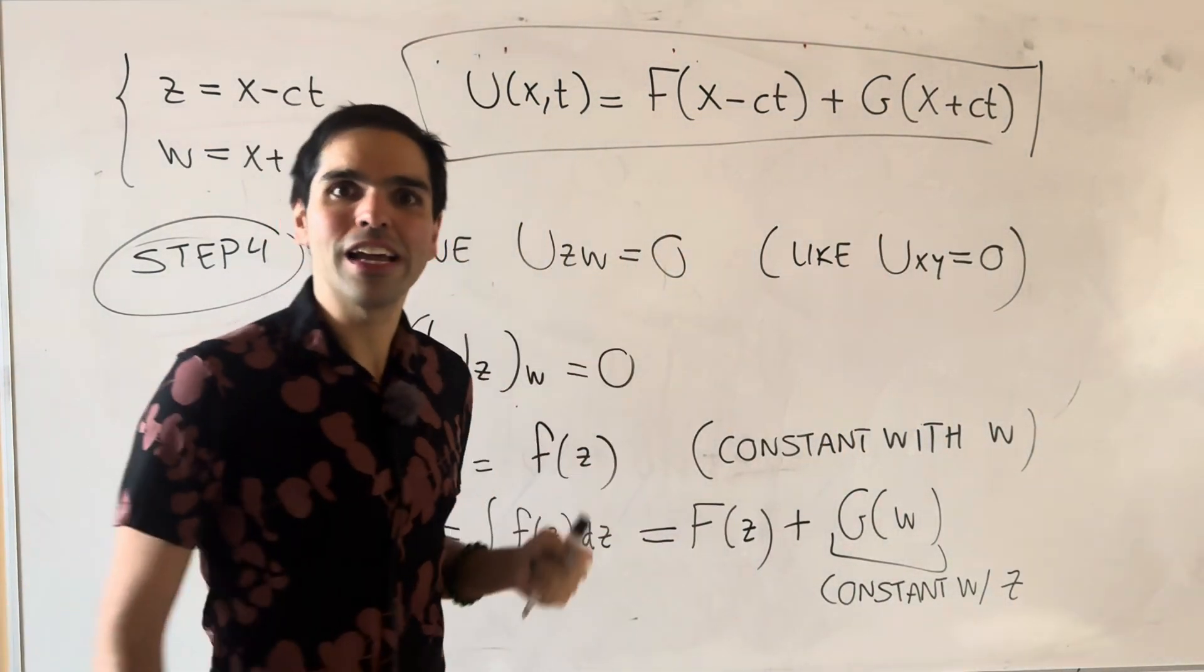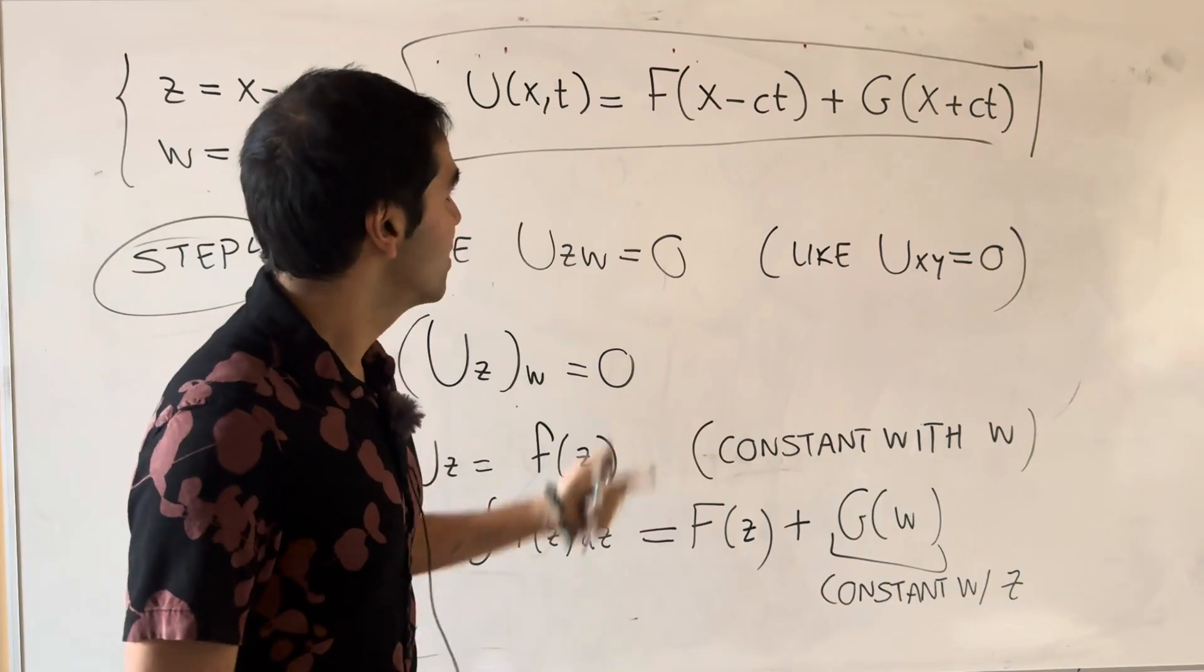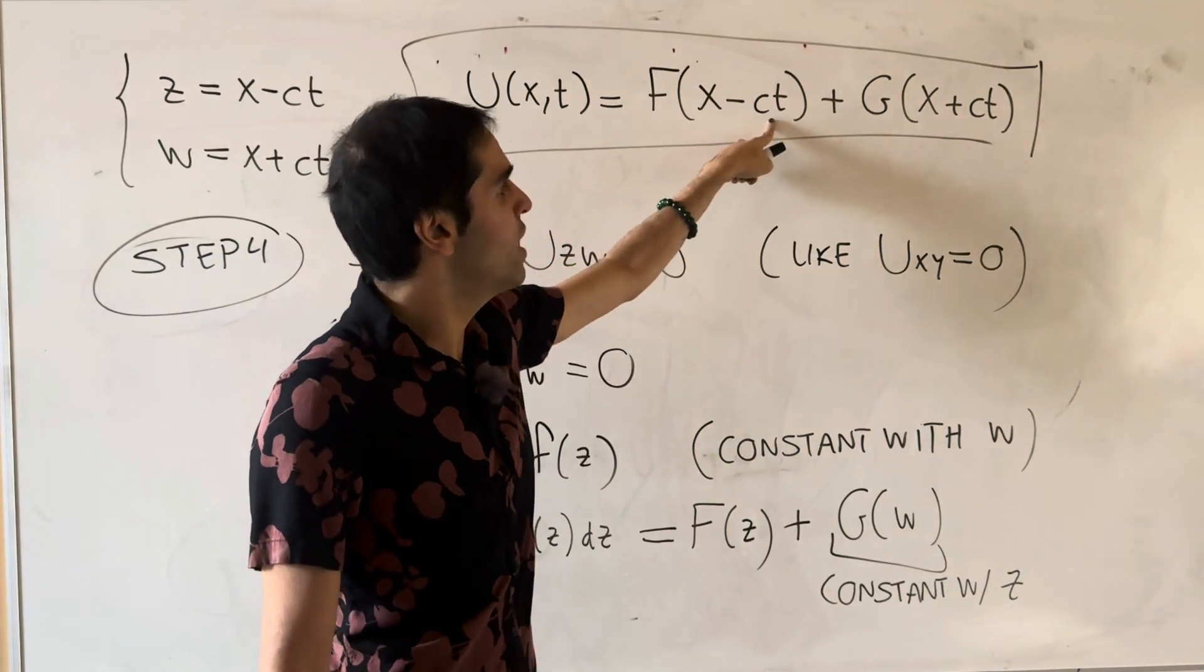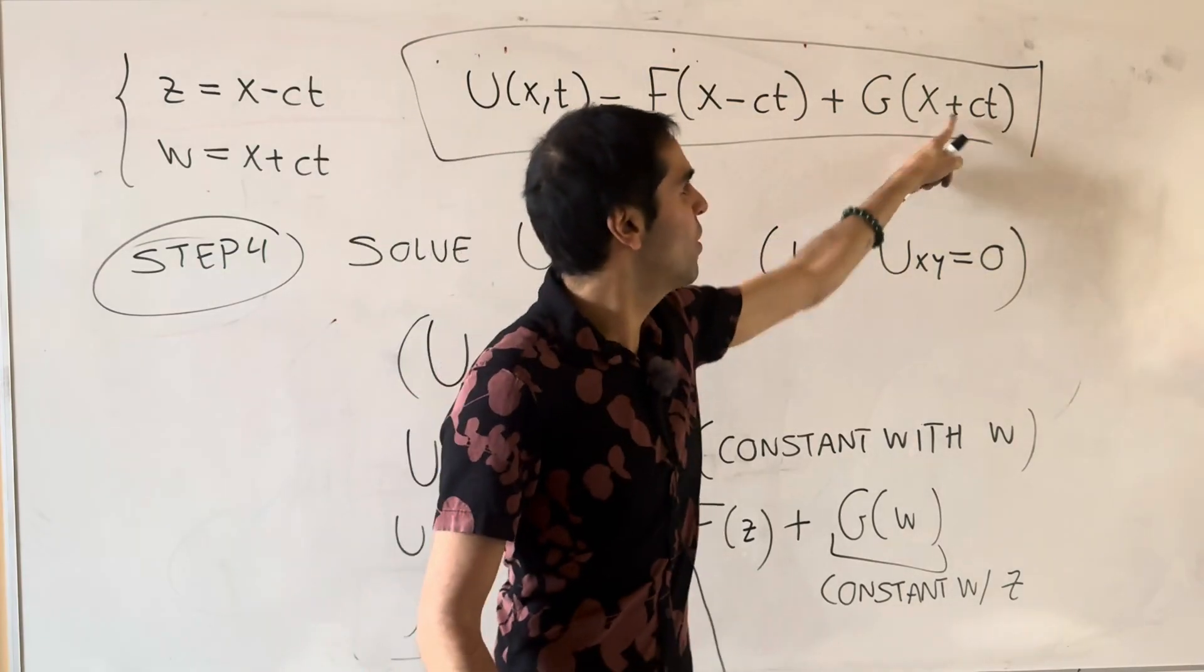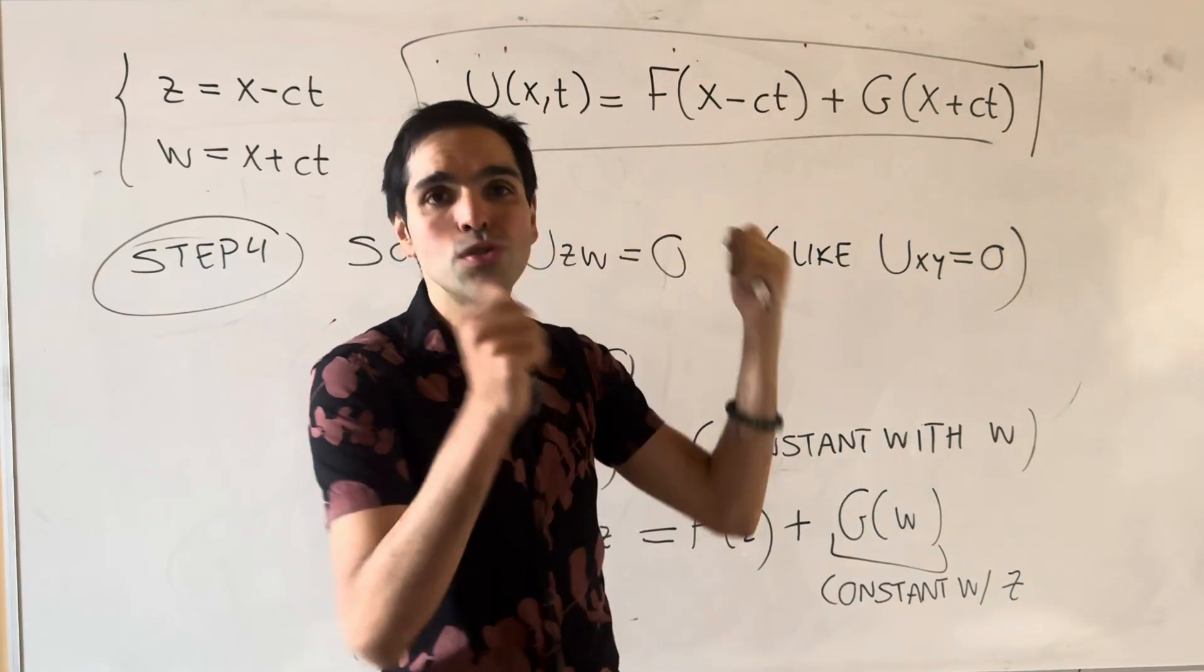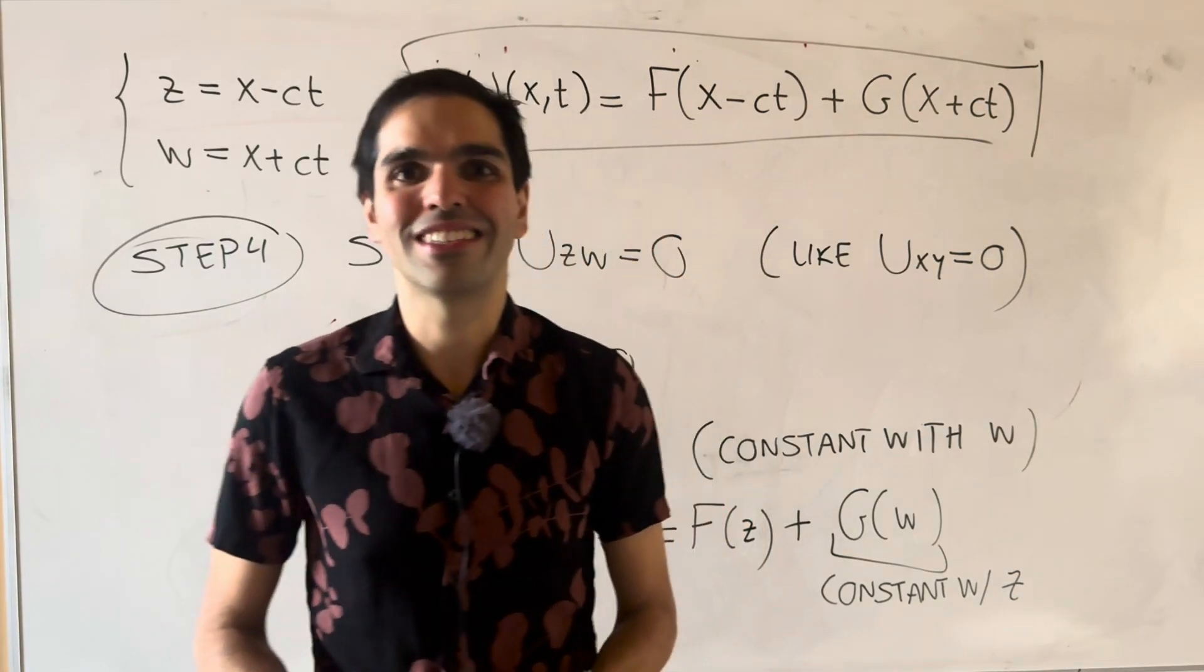And lo and behold, we finally get our wave equation solution. Which, once again, is cool because this model is a wave going to the right and this model is a wave going to the left. So this is saying any wave is just a superposition of the two, which is kind of neat.